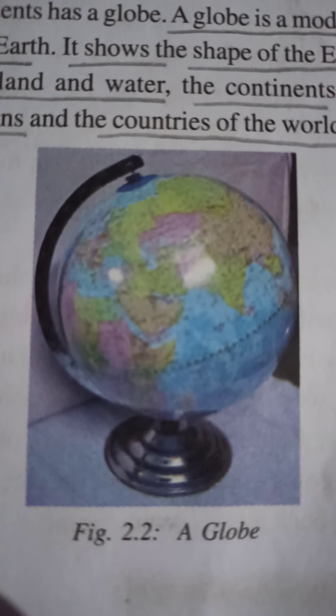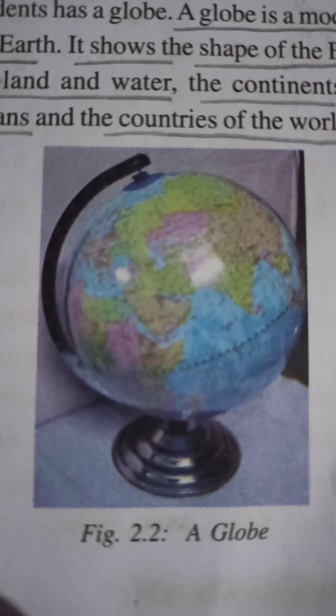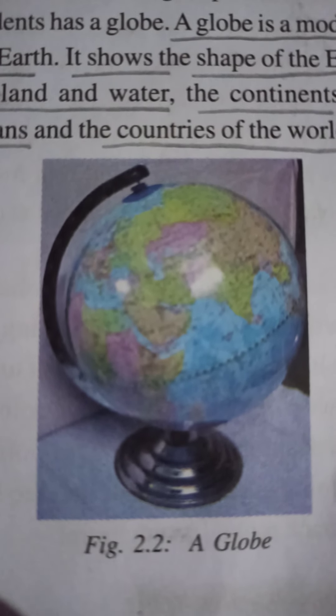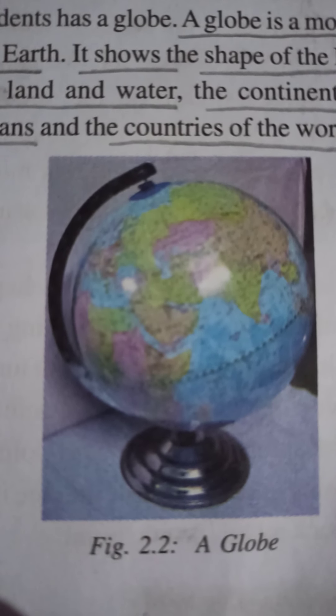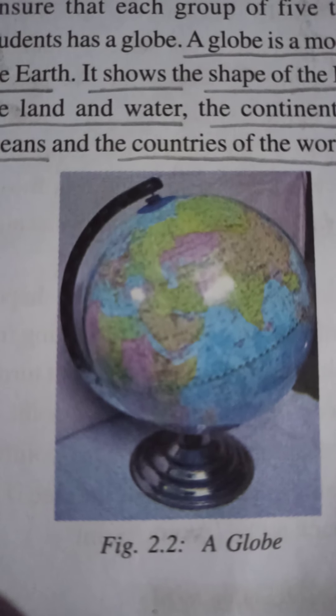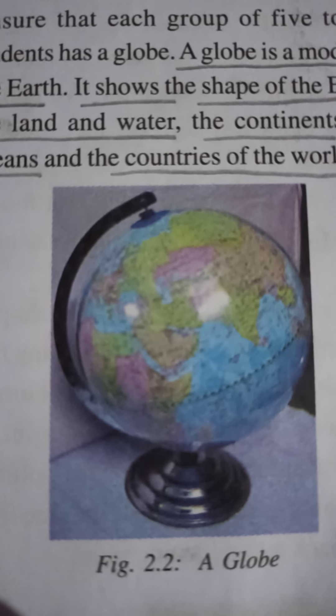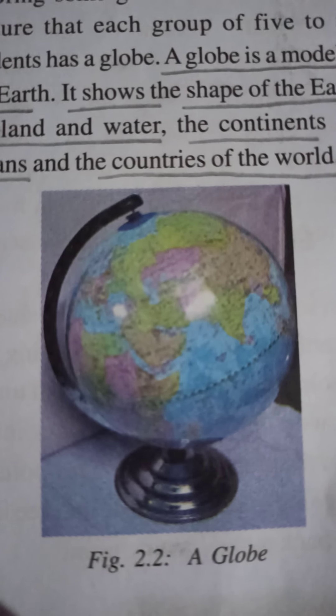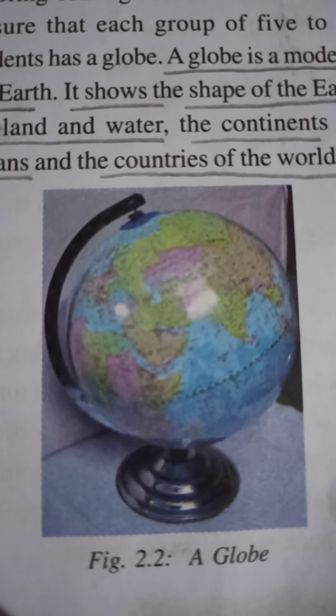Two important tools used to study the Earth are globes and maps. A globe is a small model of the Earth which shows us its different features on a smaller scale. Globe shows the exact location, the shapes, and gives us the idea of land area and water bodies.